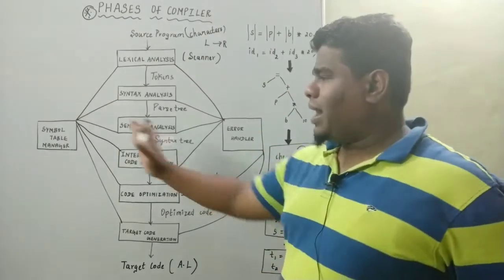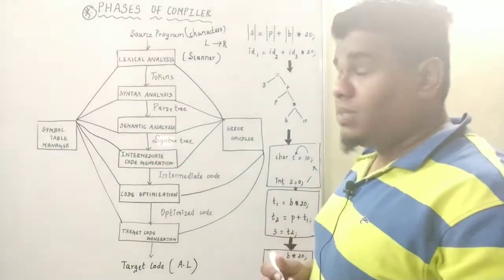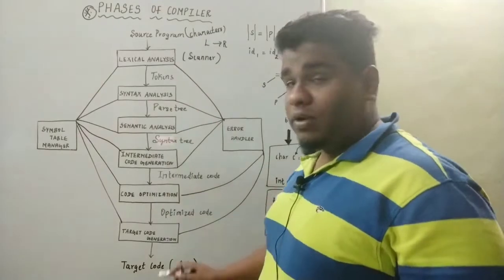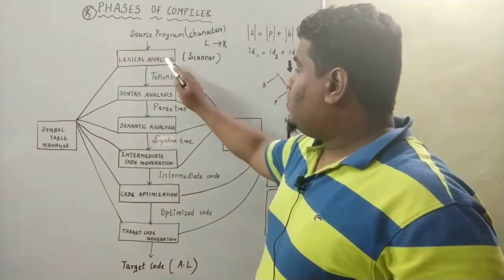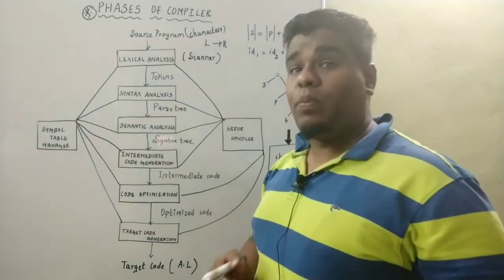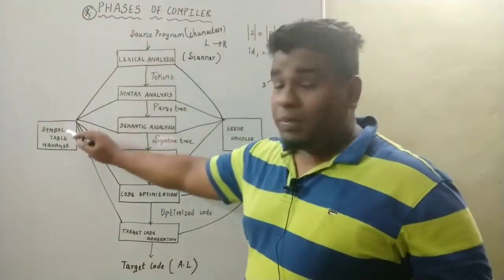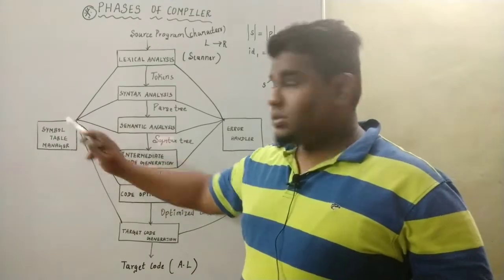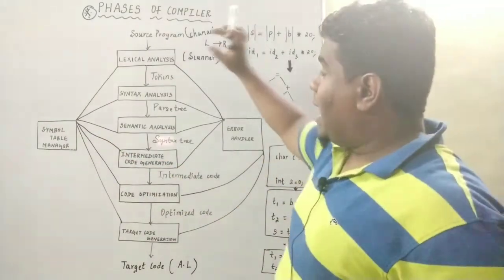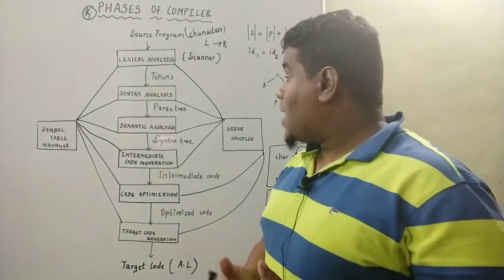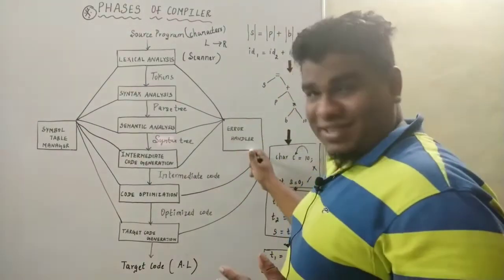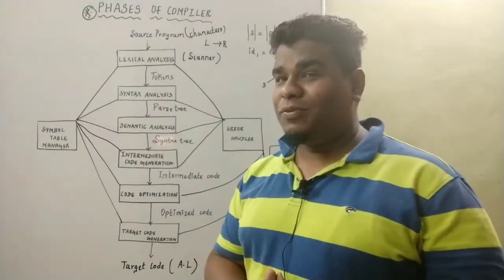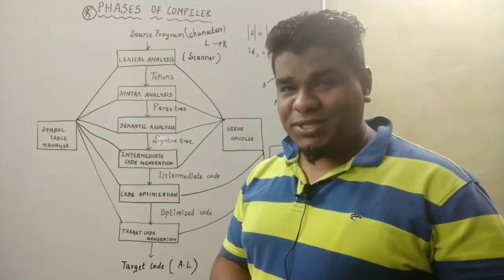This covers the phases of compiler design, along with two additional parts: the symbol table manager and error handler. The symbol table manager stores the data structures used in each phase of the compiler — all the symbols are stored in the symbol table. The error handler stores any errors that occur in each phase of the compiler. This is a very important concept in compiler design: the phases of compiler.